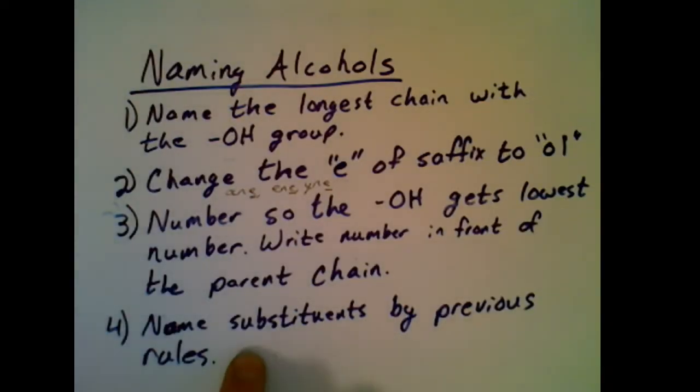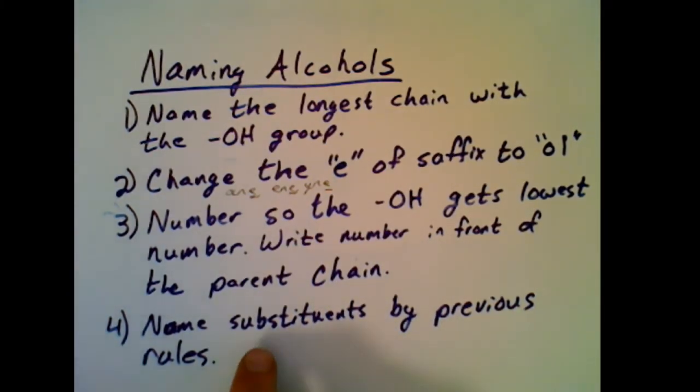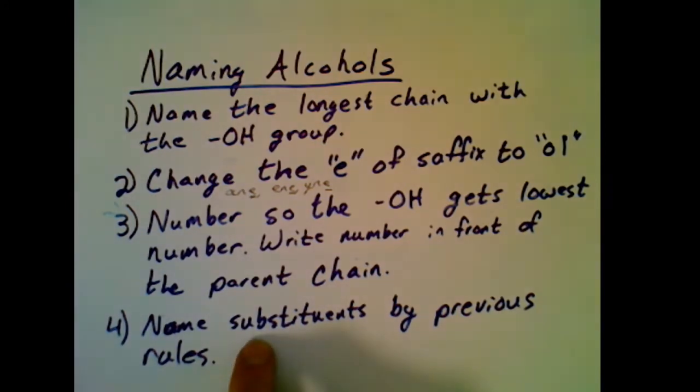From that point on, you just name substituents the way that you previously would. The OH is going to set up a numbering system, so you just use the numbers that are going to be given. And so things like alkyls and haloalkanes or halogens that are attached are just going to be named using the same prefixes that we've learned previously.